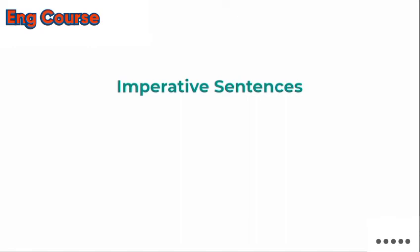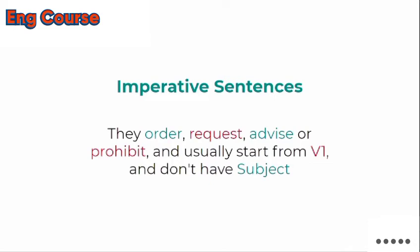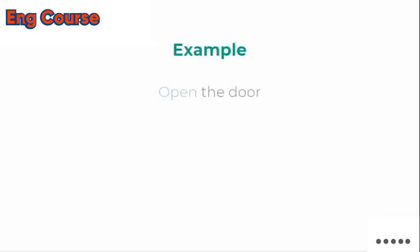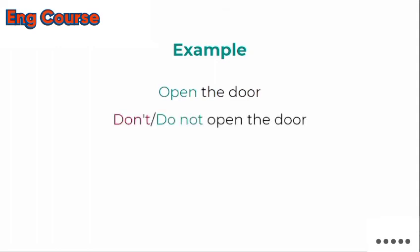The third type of sentences is imperative sentences. Imperative sentences show order, request, advice, or promise. They usually start from V1 (base verb) and don't have a normal subject. For example: 'Open the door' — this starts with V1 'open' and is an order, so it is an imperative sentence. If you add 'don't' or 'do not' — 'Don't open the door' — it becomes a prohibition, which is a negative order.